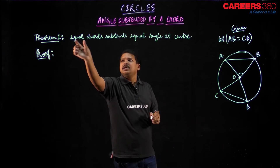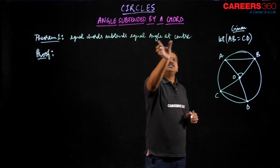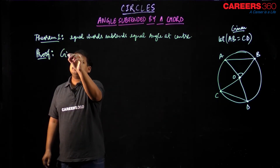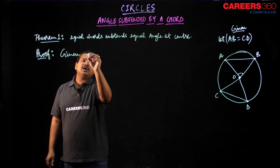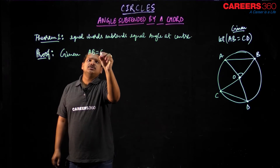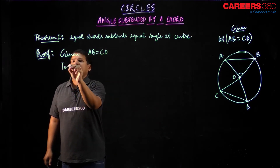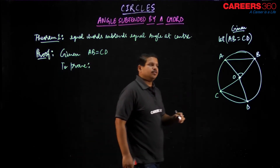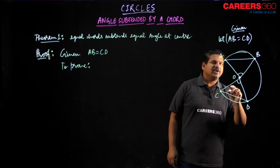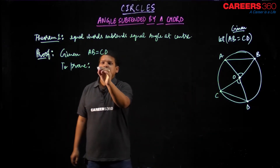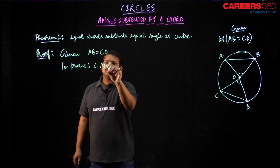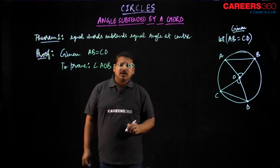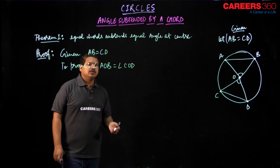Because it is written: equal chords subtend equal angles. So it is given to me that AB is equal to CD. And to prove — what we have to prove is that angle AOB is equal to angle COD.